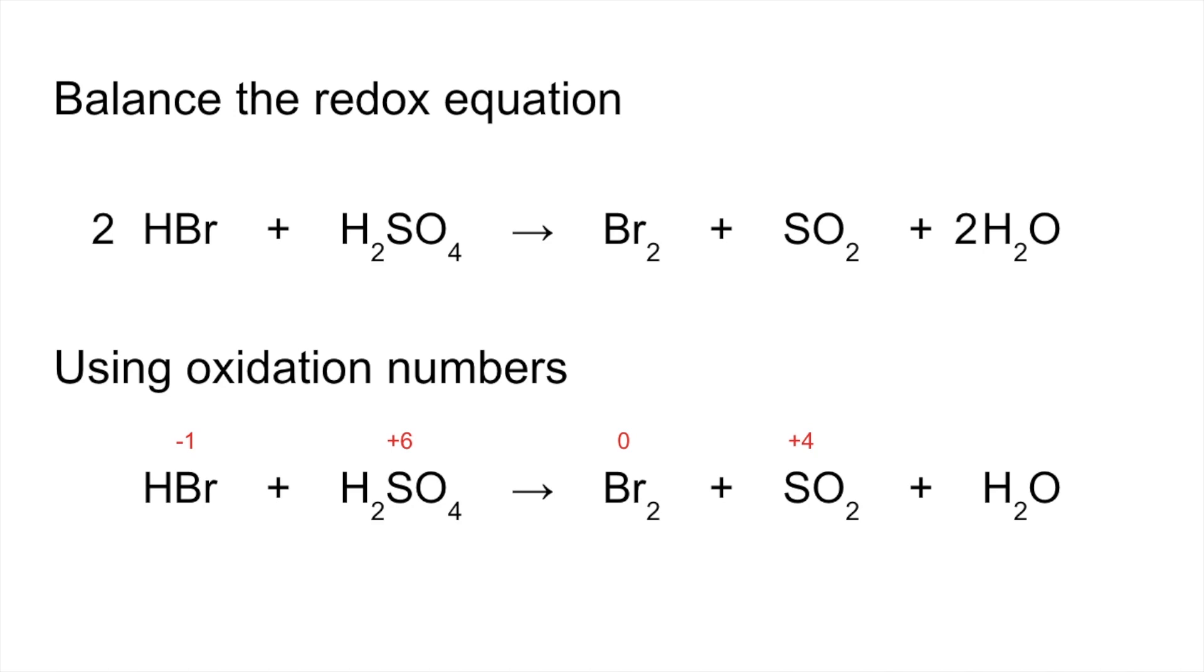At the moment we've got a change of 1 for the bromine but a change of 2 for the sulfur. That bromine needs to go up to 2, so we need a change of 2 to match with the change of 2 there. We put a 2 in front of the HBr and then to finish the balancing the 2 goes in front of the H2O.